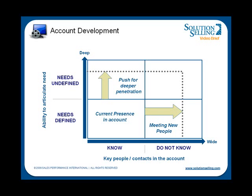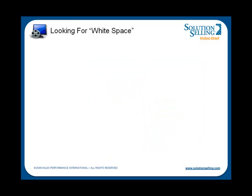First, list your account's business units down one side of a piece of paper or a spreadsheet. This is often not as easy as it sounds — think about how your account makes decisions, especially for the kinds of offerings that you provide, and then list their business units or divisions according to their decision-making policies.